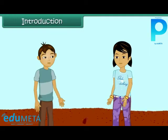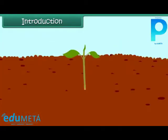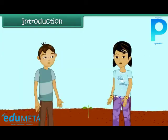Look, Ruchika, there is a new plant arising in the soil. Yes, there are only two small leaves coming up in the soil. Ruchika, do all the plants grow up like this only?